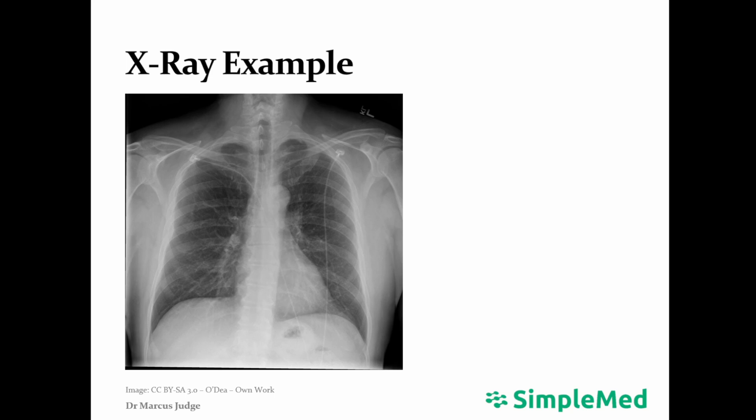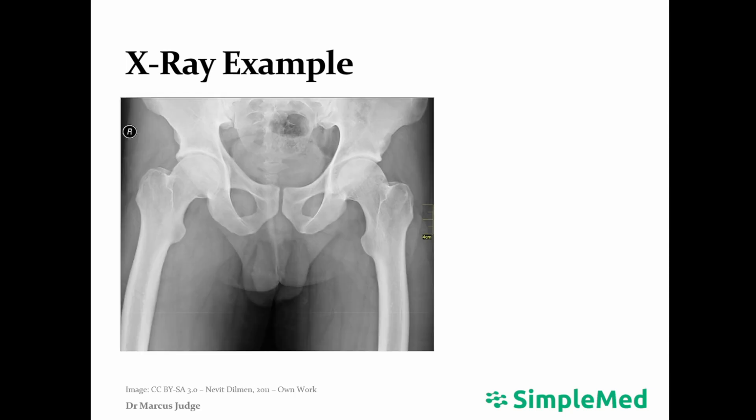This is an example of a normal chest x-ray. This chest x-ray is carried out with the x-ray machine behind the patient facing forward, and is known as the PA or posterior anterior view. This is also an example of a pelvic or hip x-ray. You might do this scan in a patient who might be frail or had a fall to assess for neck of femur fractures.